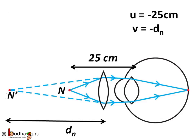And, v is the distance of near point for the person with hypermetropia. Say, it is equal to minus d_n. In this case, making an image on point n dash would be enough for us. This image at point n dash acts as an object for eye lens and hence the final image is formed at the retina.